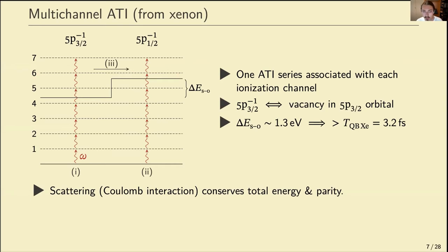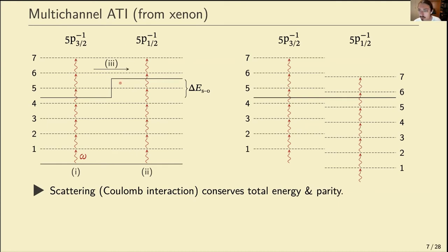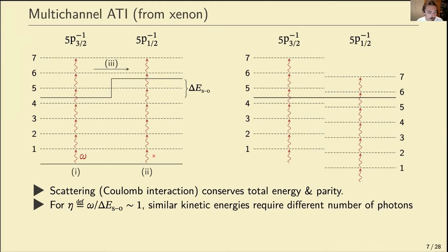This raises the question: does different parity mean zero ionic coherence between the two channels? A related problem is that with long pulses — much longer than the quantum beat period — peaks from the two channels will be spectrally resolved, making overlap seem impossible. This particular problem was studied a few years ago by Stefan Pabst. With a fixed photon energy of ~0.65 eV and ~0.1 eV spectral uncertainty, he showed that when the spin–orbit splitting equals one photon energy, the degree of coherence goes down, approaching but not exactly zero.